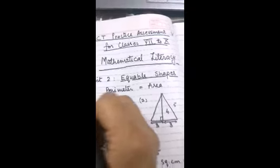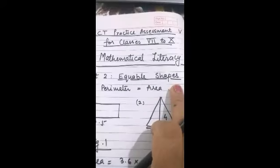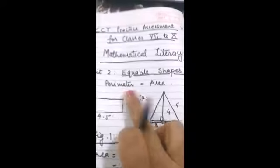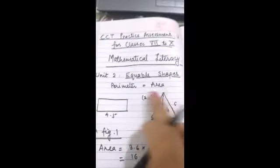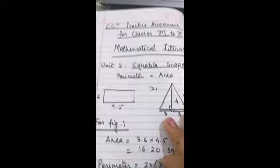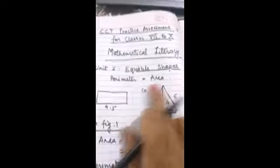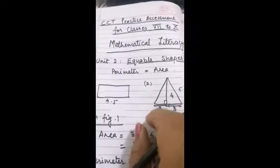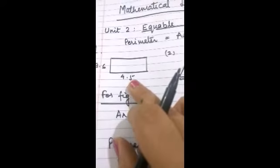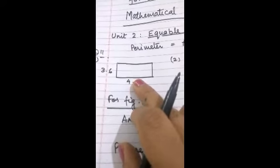Now first was question number 11. It was about equable shapes. The meaning of equable shapes was given that numerically the perimeter should be equal to area, that is the value should be equal. As units cannot be equal, so only the value if it is equal then the shape is called equable shape. In this two figures were given, in figure 1 there was a rectangle with sides 3.6 and 4.5.